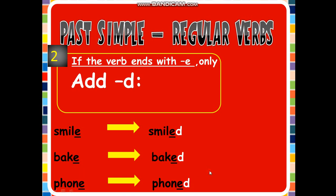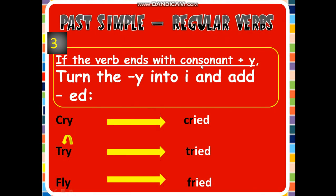The third rule: if the verb ends with a consonant plus 'y', please pay attention — it has to be a consonant before the 'y'. Turn the 'y' into 'i' and add 'ed', just like we did in the simple present. Cry — we had a consonant before the 'y', so we turned the 'y' into 'i' and added 'ed'. Try → tried. Fly → flied.